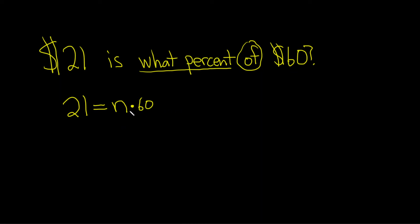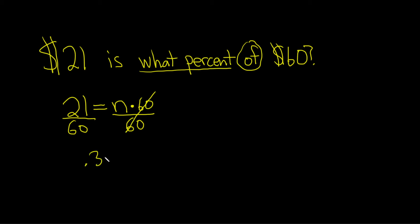So whenever you have a variable being multiplied by a number like this and you're trying to solve for it, you have to do the inverse operation, which is division. So you write a line and put the 60 here — write a line, put the 60 here. This means we're dividing by 60. So 21 over 60, according to my calculator, is 0.35. And that's equal to our n.